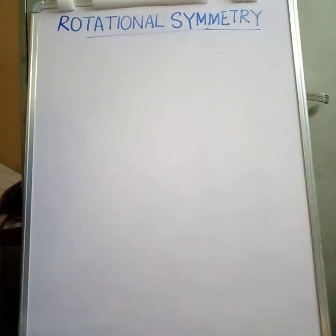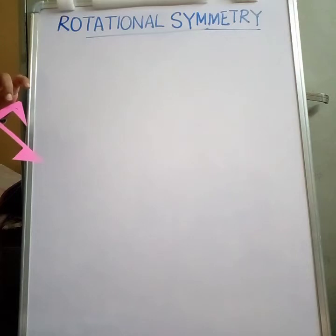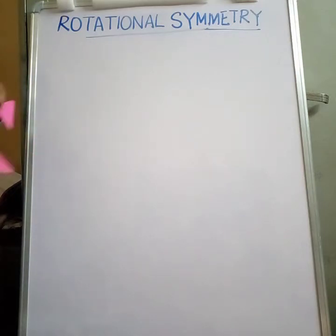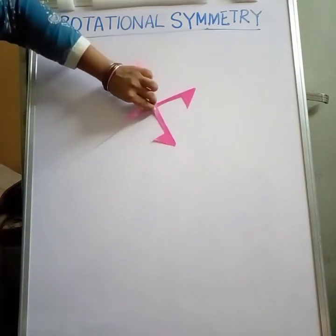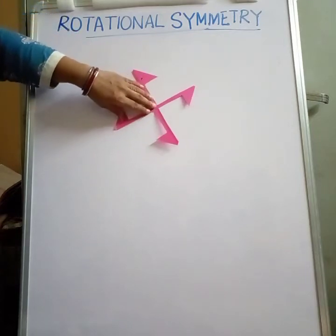A figure is said to have rotational symmetry if, while rotating, it looks the same at least once before completing a full round. The number of times the figure shows the same position in one complete round is called the order of rotational symmetry.